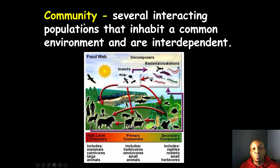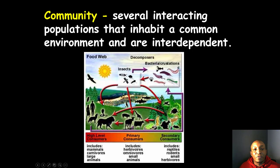A community is several interacting populations that inhabit a common environment and are interdependent. This would include humans, animals, insects, bacteria, and birds — a group of different populations living together in the same environment.